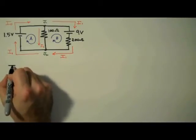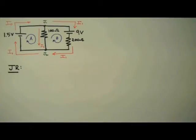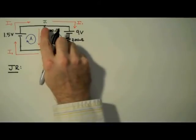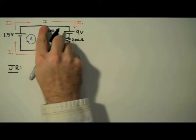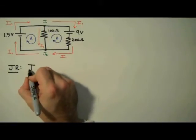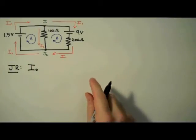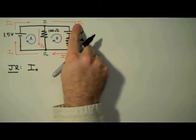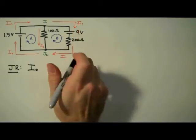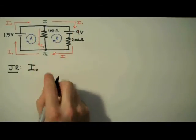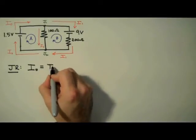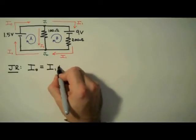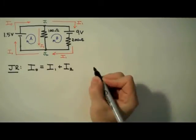Now that we've labeled our circuit, we're going to apply the junction rule, which states that the sum of the currents into a junction is equal to the sum of the currents out of a junction. So we're going to apply this to junction 1. The current in is just I0, so on the left hand side of the equation I'm going to write I0. And the currents coming out of that junction, we have I1 and I2, so on the right side we'll have I1 plus I2. This junction rule, by the way, is just a consequence of the conservation of charge.